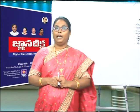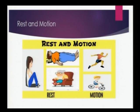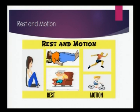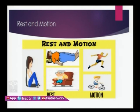Look at this picture. Here you can see some people are taking rest — a man lying on the bed, a woman sitting on the chair, and a girl sitting on the floor. On the other part of the picture, you can see a man running and a boy cycling. So some are at rest and some are in motion. What is this rest and motion?